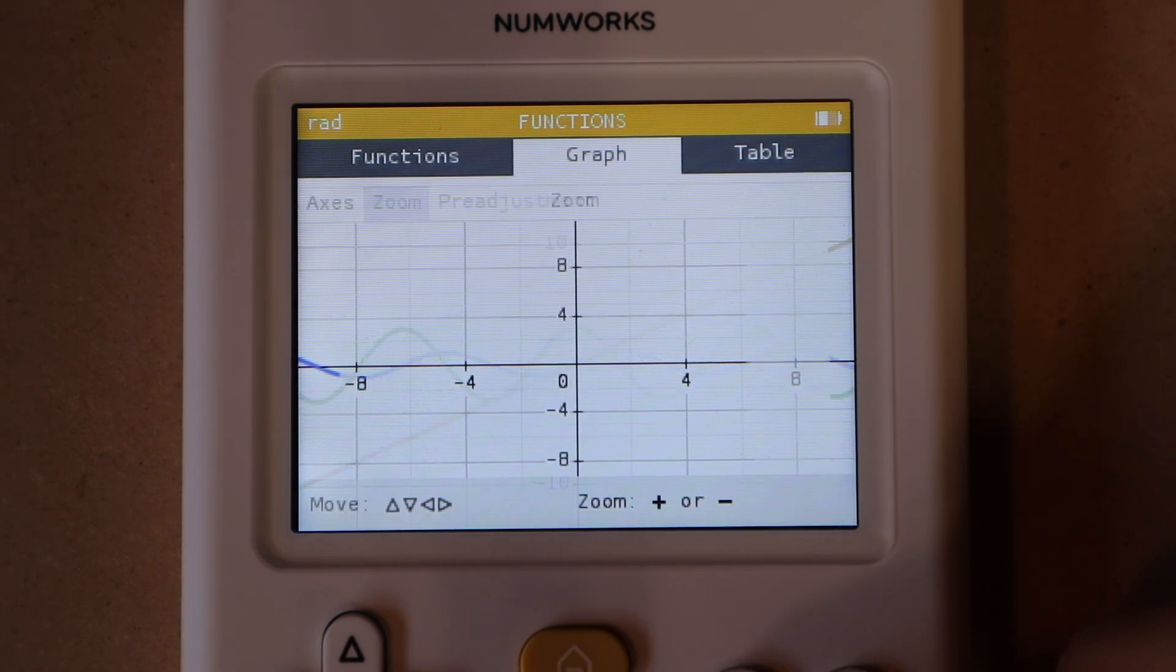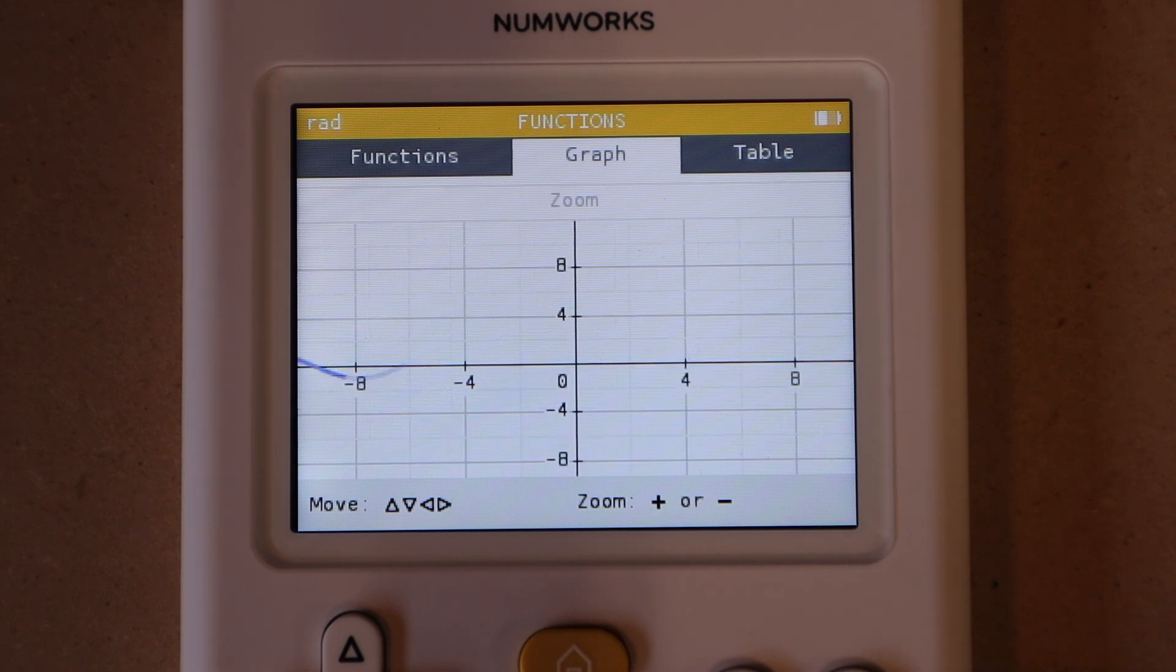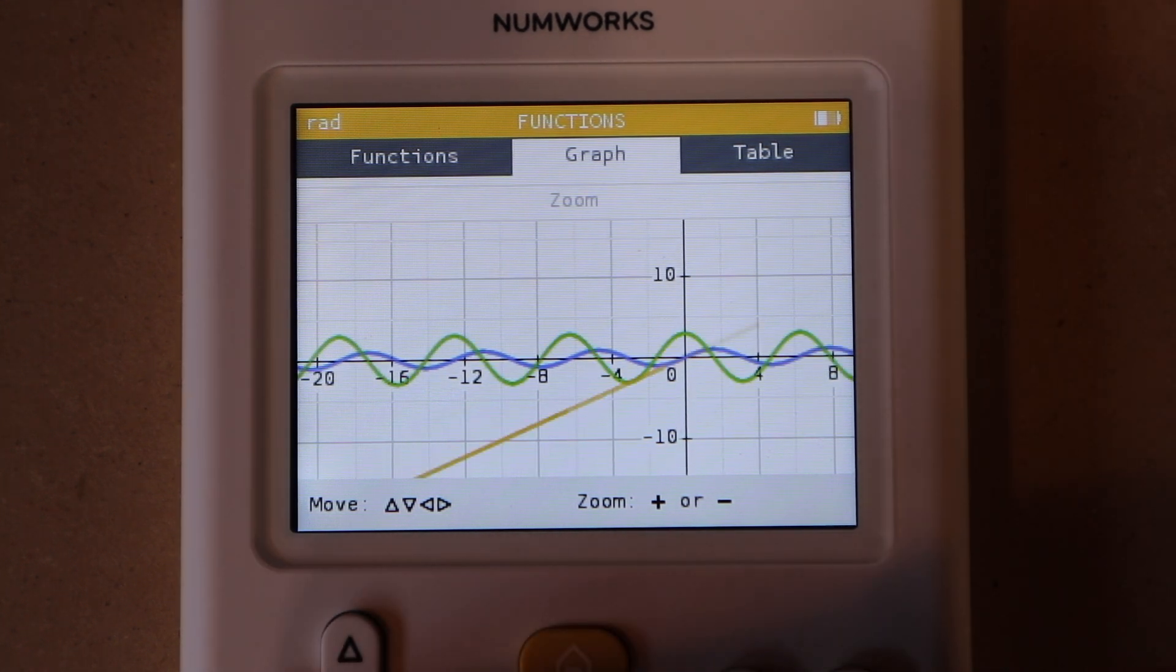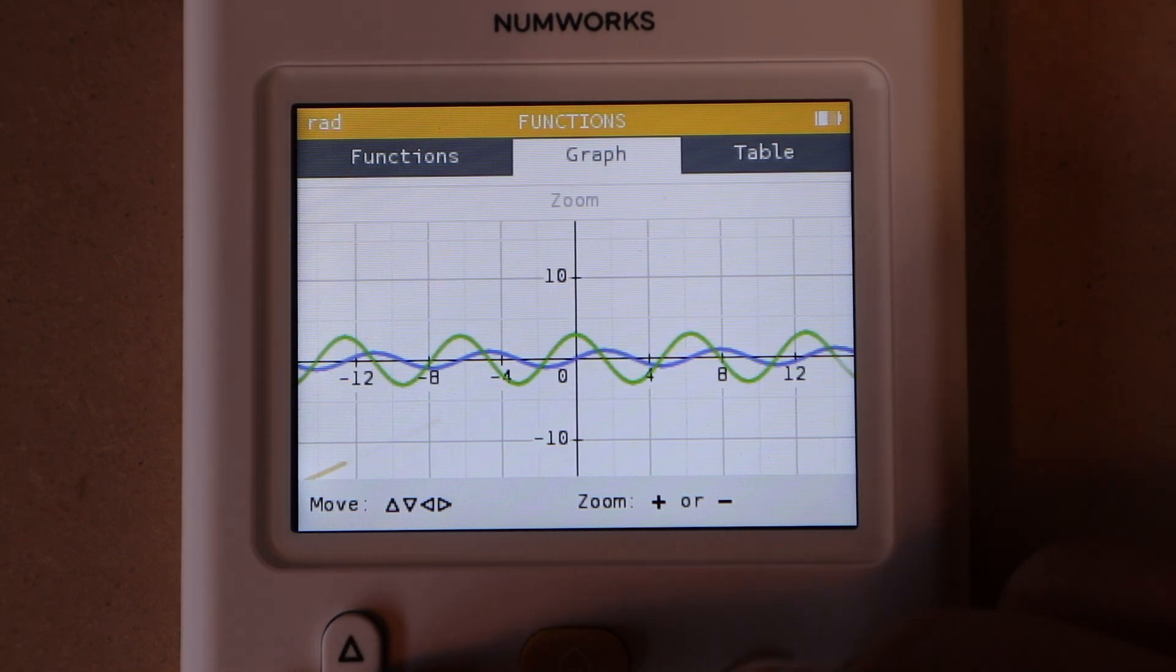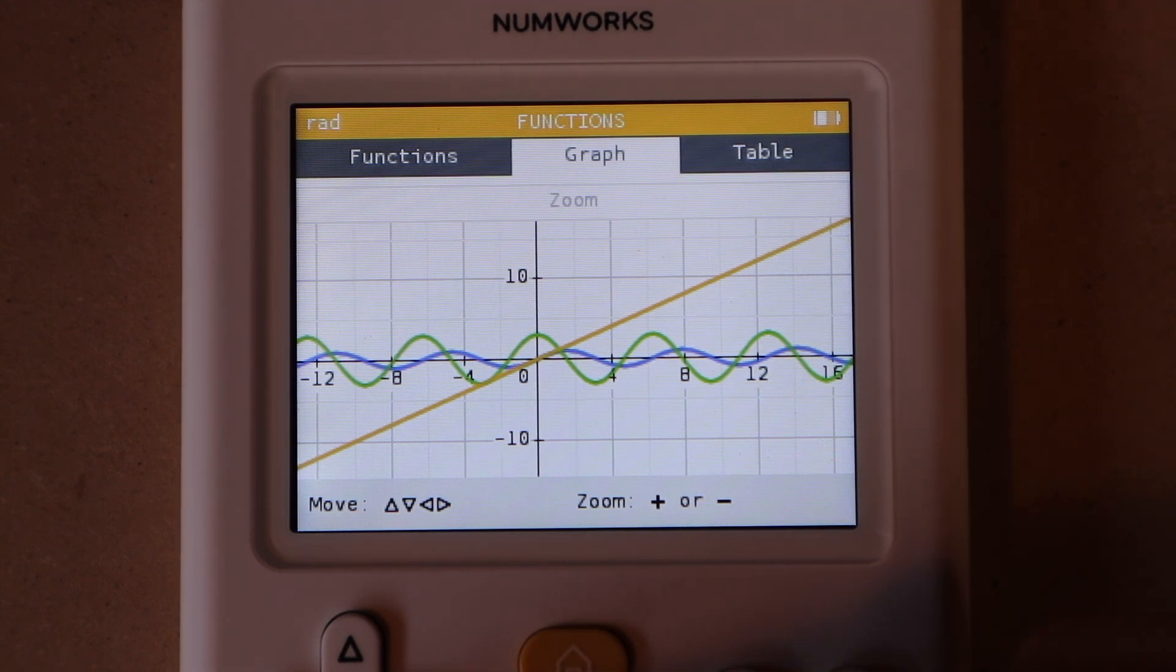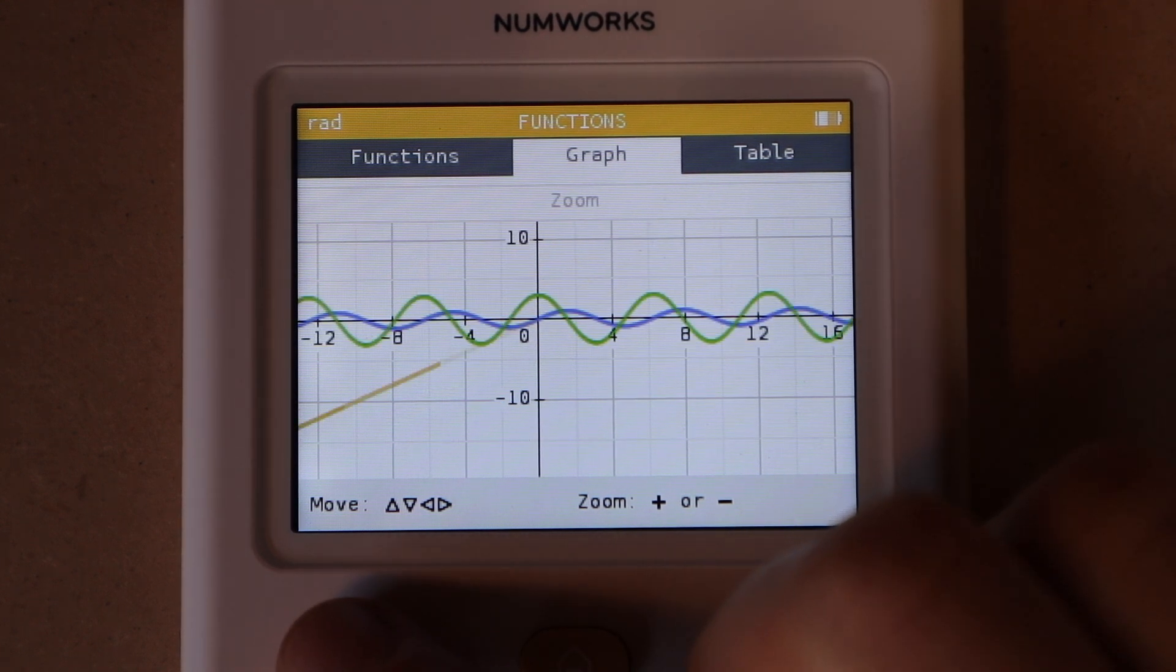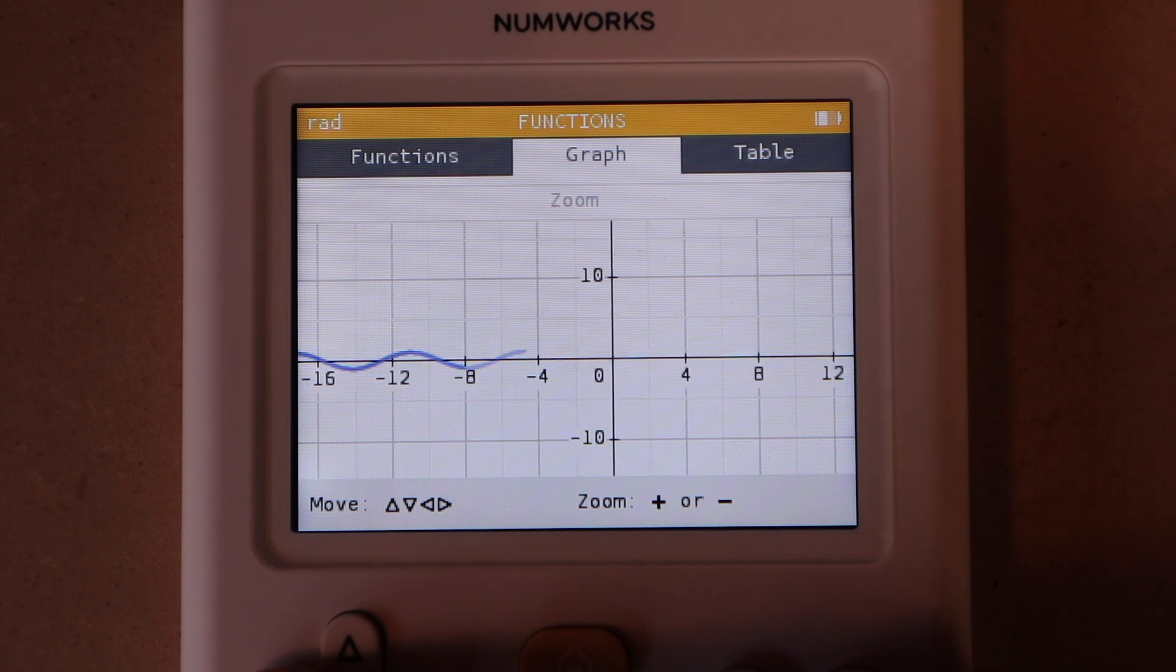If you want to, you can use the zoom option to zoom in and out using the plus and minus keys, and then use the directional pad to scroll around and get a better look at your functions. The only problem I have with this zoom function is that it has to redraw the lines every time you change the window size or pan location.